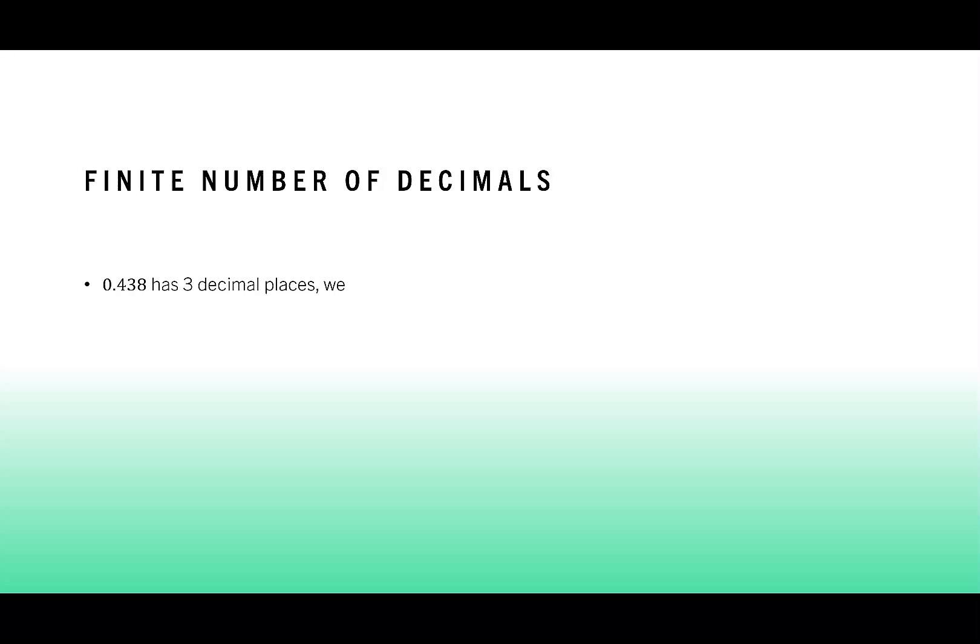Let's try that again. Now I have 0.438. This time I have three decimal places, so I need to have three zeros in my denominator. We'll write 0.438 is 438 over 1,000. We can reduce that by dividing by 2, we get 219 over 500.